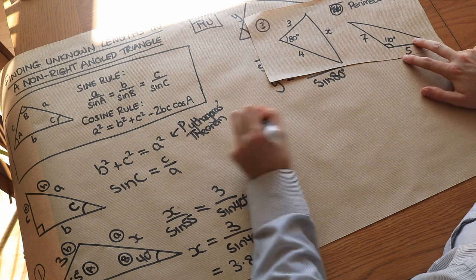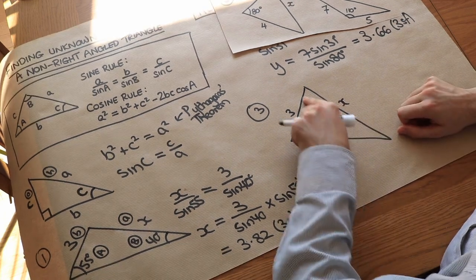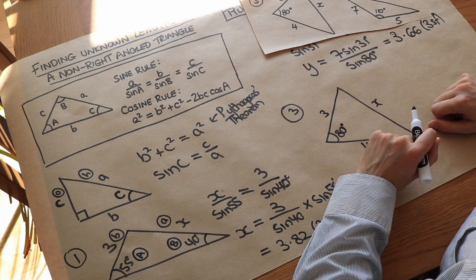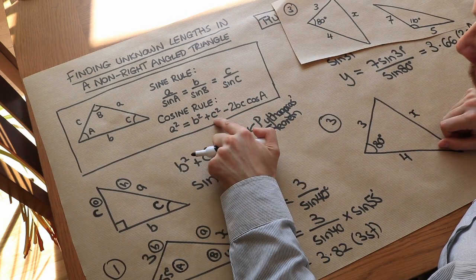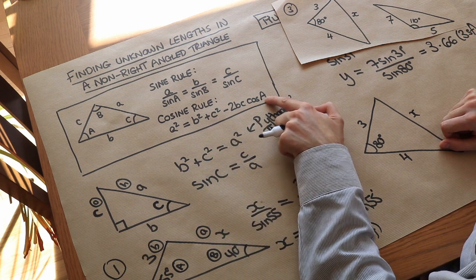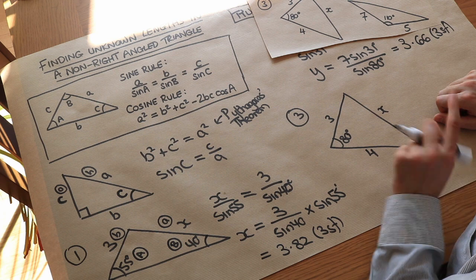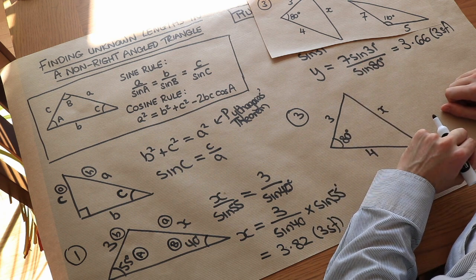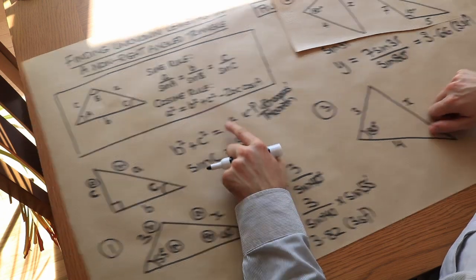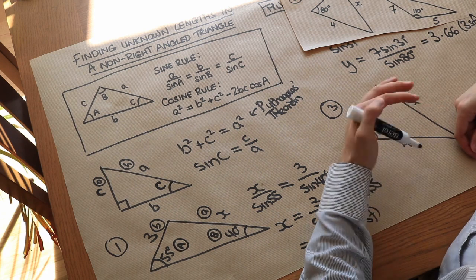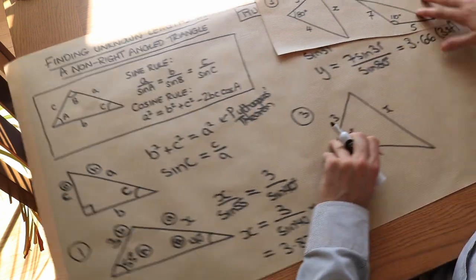In question 3, we can't use the sine rule because we don't have a second side-angle pair. But we have all three sides and one angle, which matches the cosine rule: a squared equals b squared plus c squared minus 2bc cos A. Notice the cosine rule is very similar to Pythagoras' theorem — it's essentially an extension that works on non-right-angled triangles. For a right-angled triangle, the cosine term cancels out, leaving just Pythagoras.